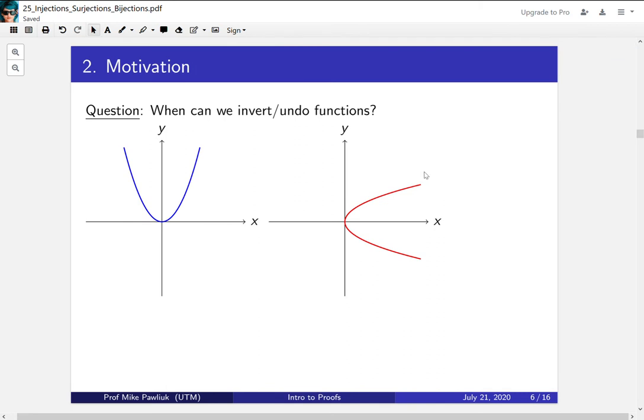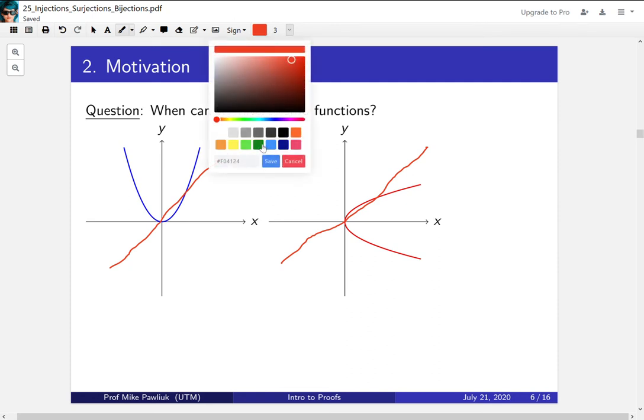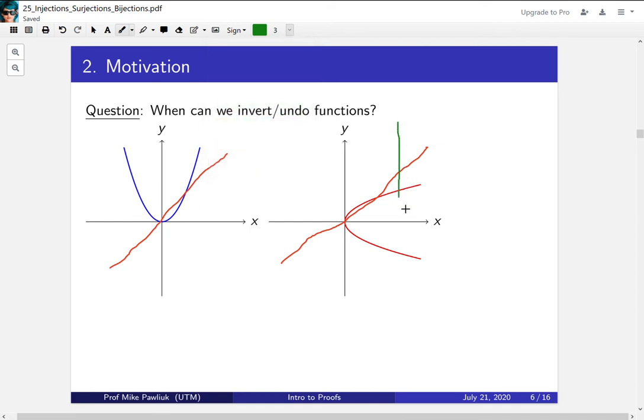Another bit of motivation is when can we invert or undo functions. When it comes to inverting functions, the procedure goes like: take the line y equals x, and then you reflect it over this way. So you reflect it across the line y equals x. And you want to know, is the reflection going to be itself a function? So this thing is a function, but when we reflect it, we get something that is not a function.